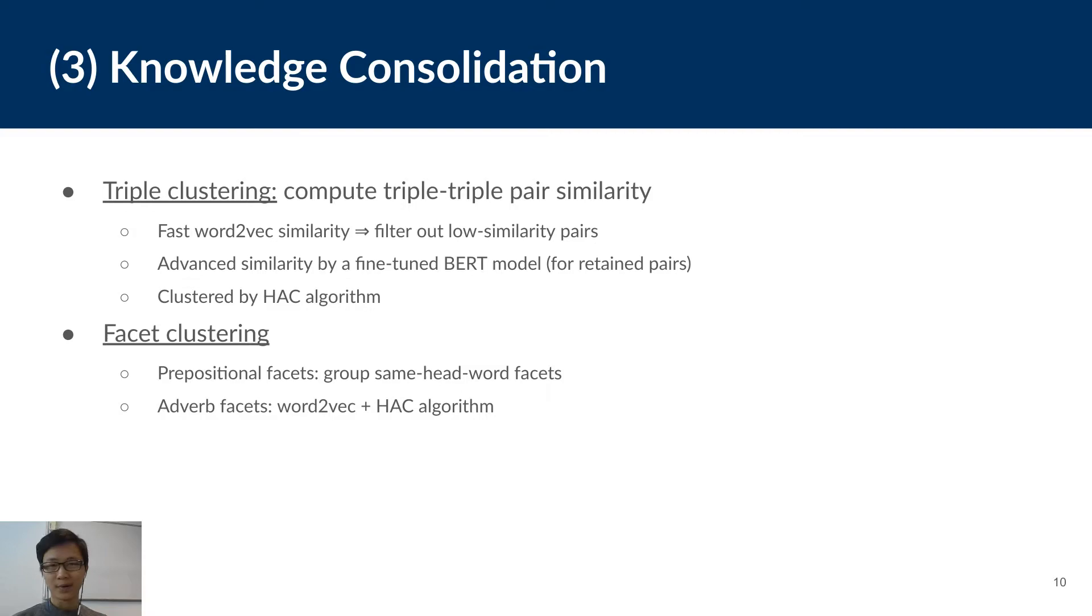And so far, we have collected open assertions, but due to the richness of natural language, assertions could have the same meaning even though they are expressed in different words. To avoid these redundancies, it's necessary to identify those assertions and group them together. We perform two levels of clustering, on triple level and on facet level. For triple clustering, we base on the similarity between two triples.